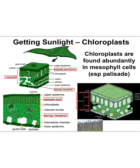Once water and carbon dioxide are in place, we just need the last reactant for photosynthesis — the oh-so-important sunlight. Sunlight is captured by chlorophyll, which is found in chloroplasts. Chloroplasts are in most plant cells, but they aren't evenly distributed.